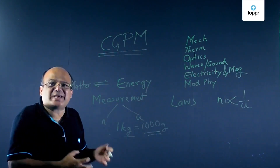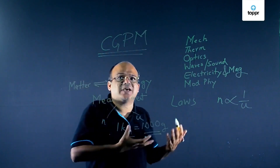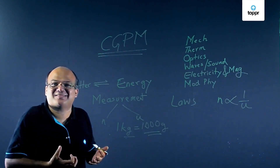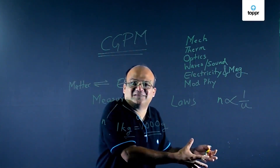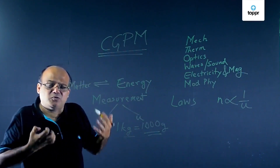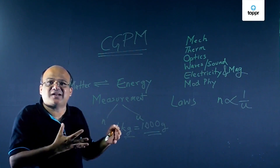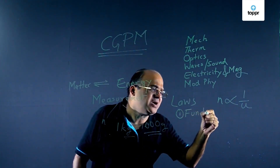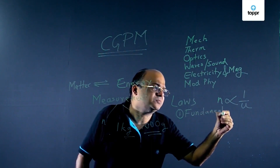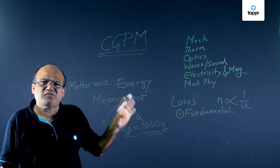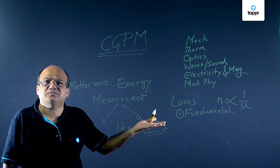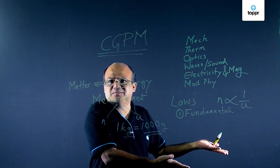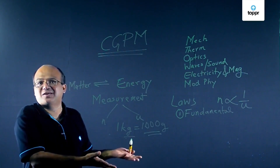On the basis of these units, we can classify physical quantities into two types. The first one is fundamental quantities, also known as base quantities. Units of these quantities are arbitrarily chosen. Unit of mass is kg — somebody decided that. Unit of length is meters — somebody decided that. Unit of time is called second — somebody decided that.